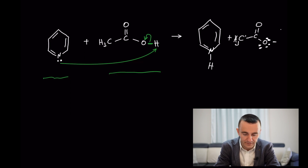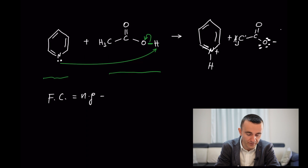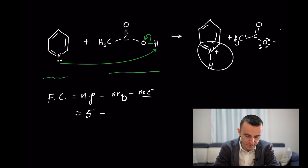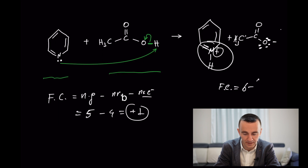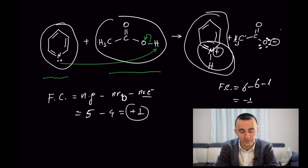Keep in mind that nitrogen here has four bonds, so it carries a positive formal charge. Formal charge equals the group number minus the number of bonds minus the number of non-bonding electrons. For nitrogen (group 5): 5 minus 4 bonds equals +1. For oxygen (group 6): 6 minus 6 electrons minus 1 bond equals −1. So pyridine becomes the conjugate acid (with a positive charge) and acetate becomes the conjugate base (with a negative charge).